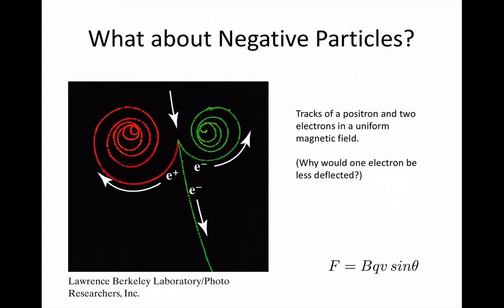But why would the other electron have been only barely deflected? Think about the equation. B is constant here. They all have the same charge q.